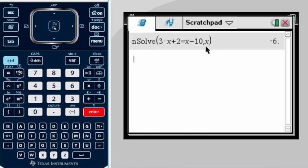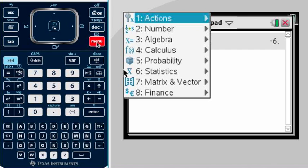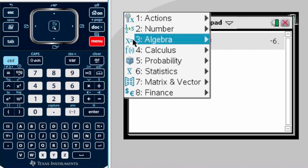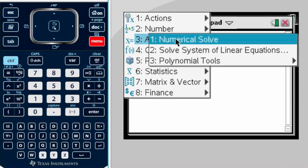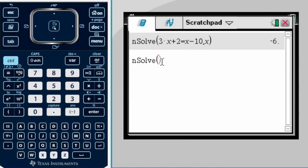I want to do one more example for you to see how you can use this for any kind of equation. Again, when there's only one variable, it doesn't matter that the variable is repeated, but as long as it's the same variable. So we're going to do Menu again. We have our menu, and we are going to select Algebra and then Numerical Solve. And again, our nSolve command appears on the screen.